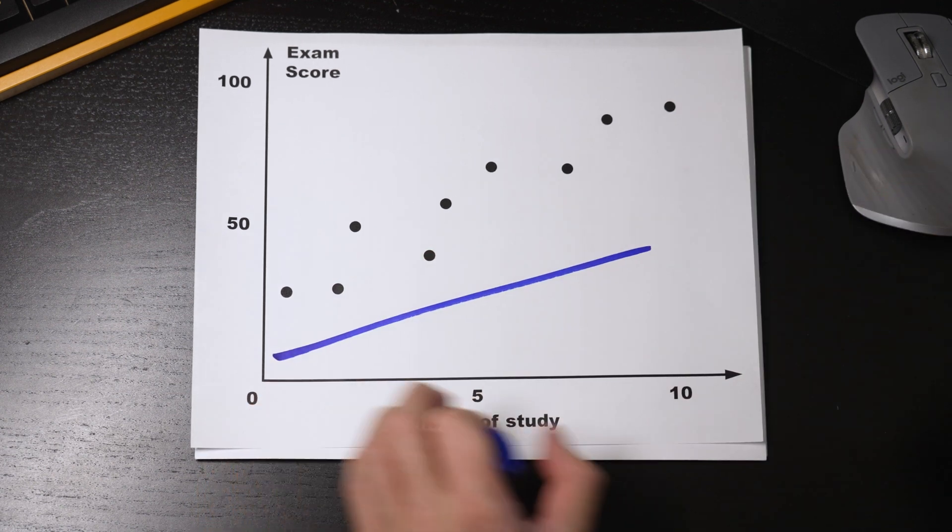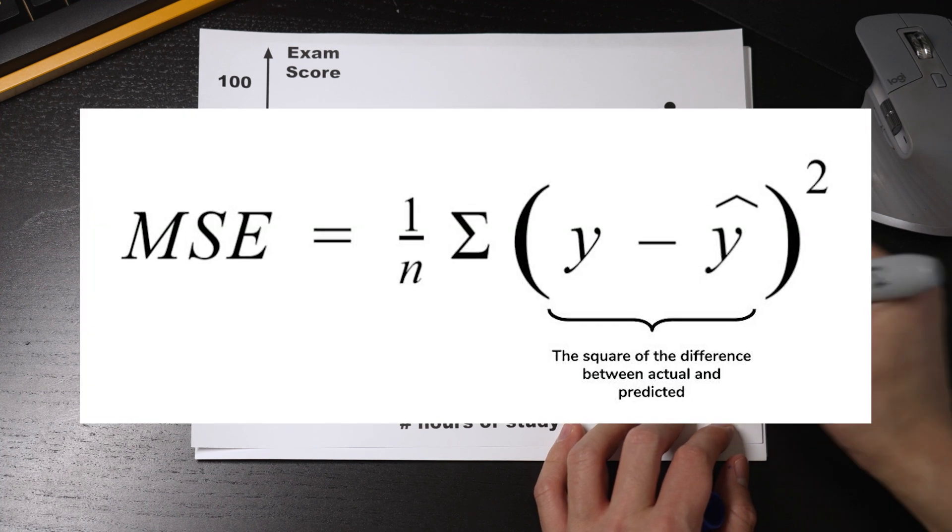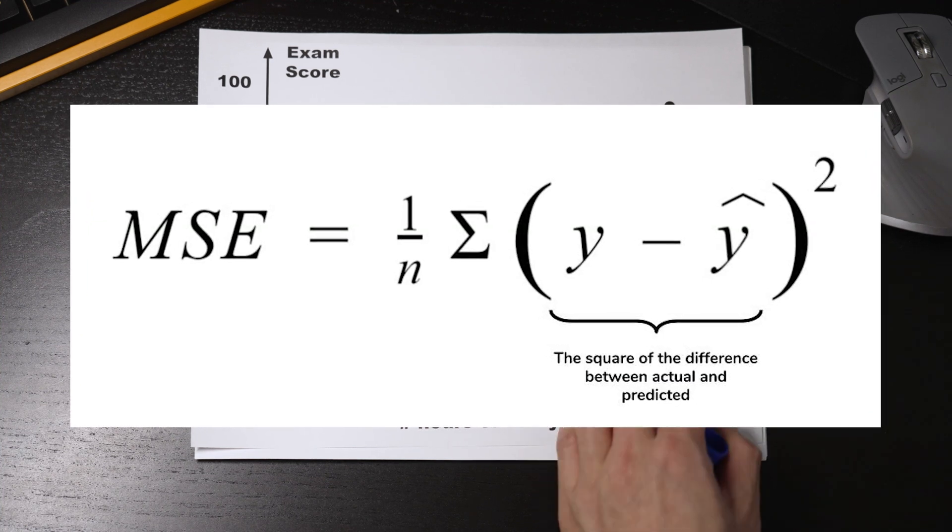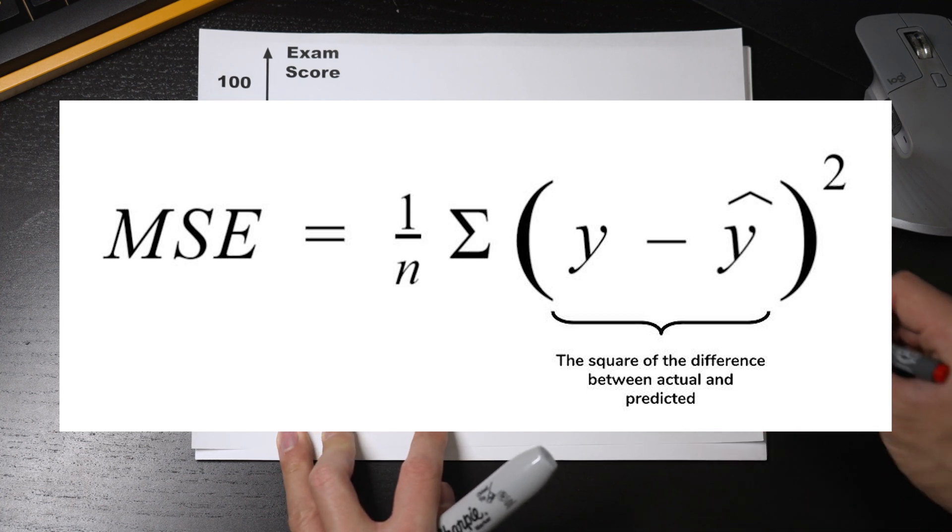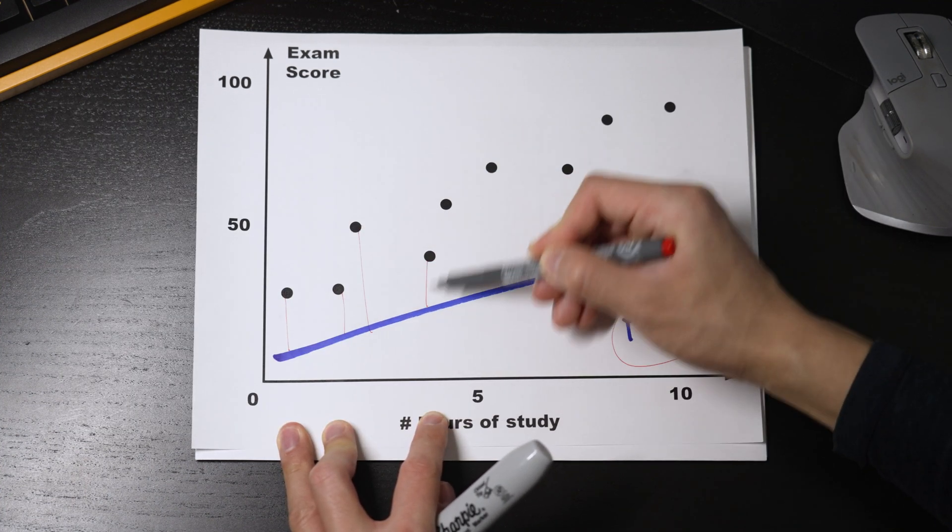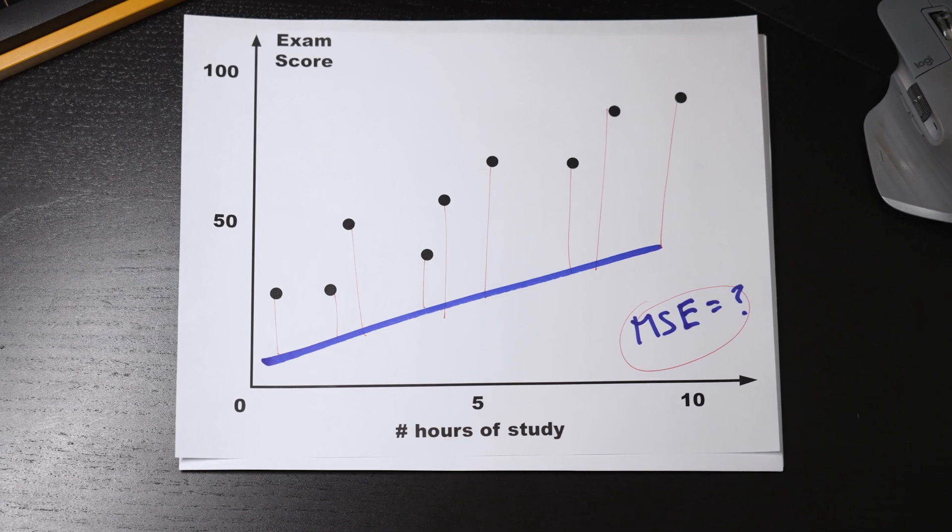But then it will be able to calculate the average error, aka the mean squared error, which is calculated using this formula. Which basically means it's calculating the difference between the point and the line and squaring it, because we only care about the squared distance of the error.